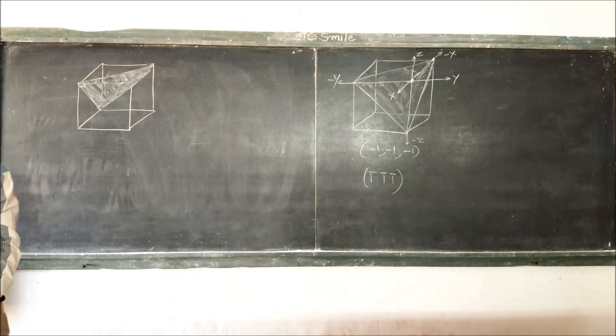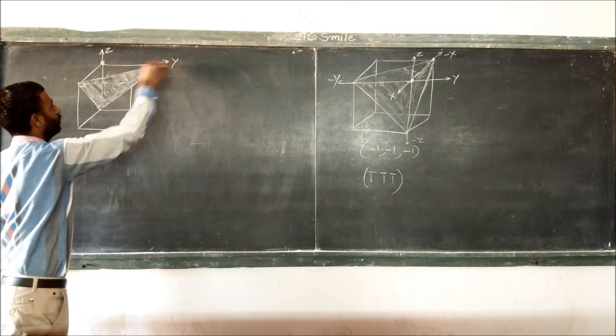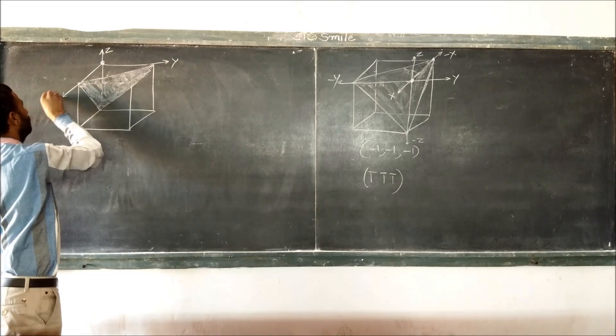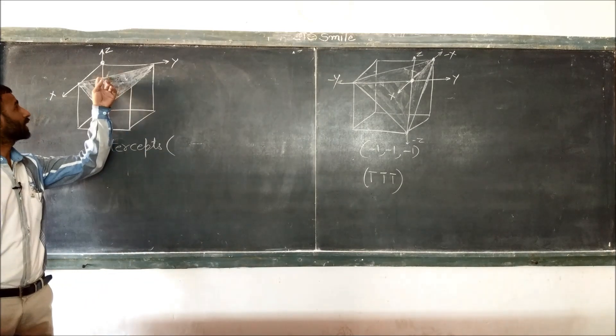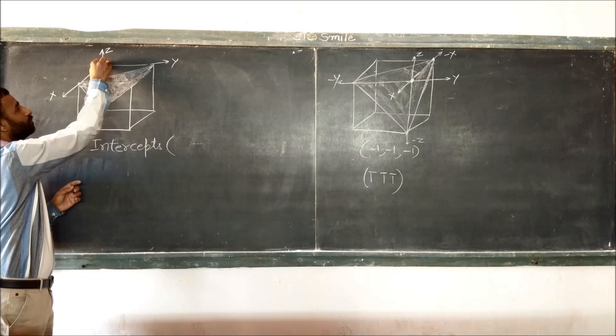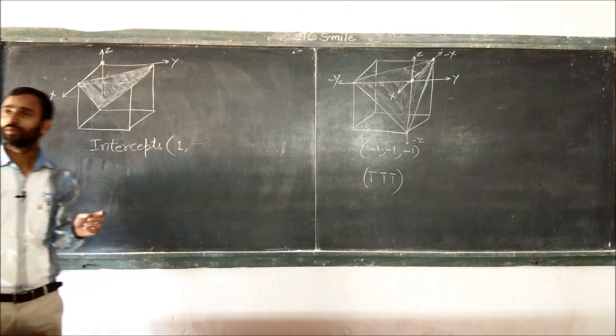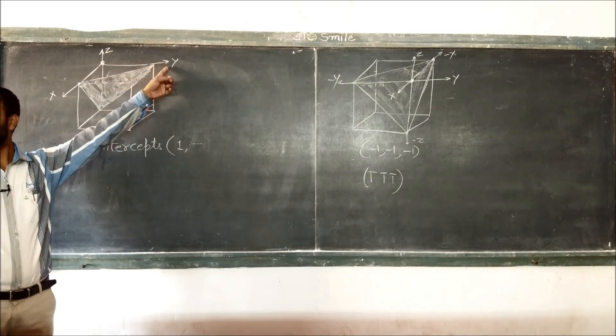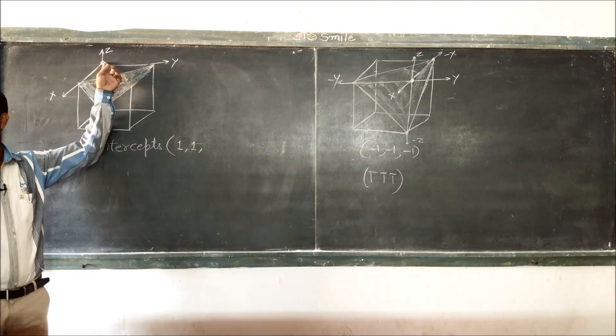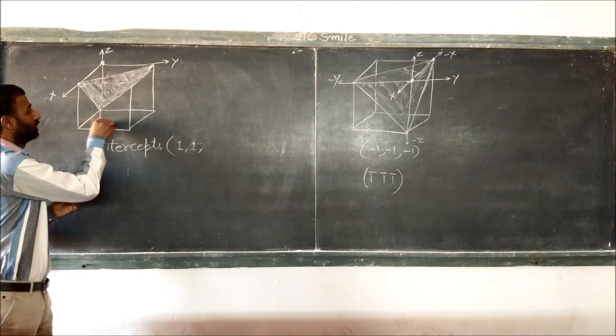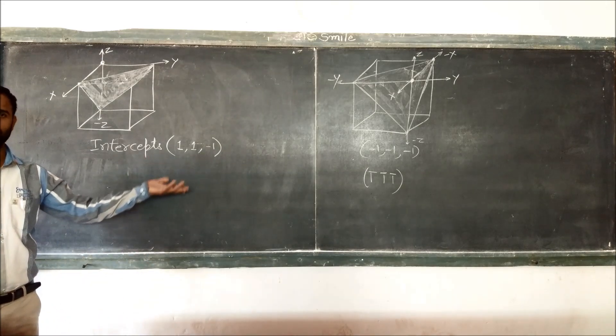This is the plane and origin is at this point Z, Y and X. What are the terms? With respect to X axis positive that means 1, with respect to Y axis again positive that means 1, with respect to Z axis minus 1 because it is minus Z axis. Reciprocal remains same.